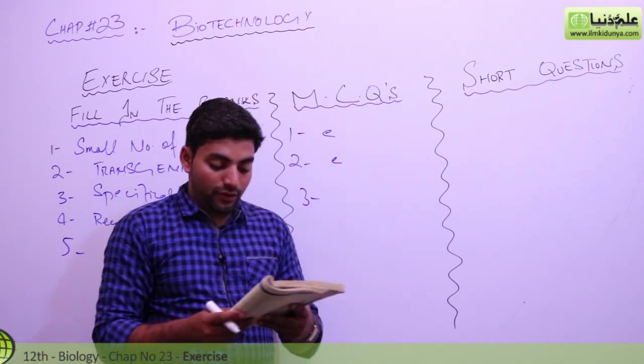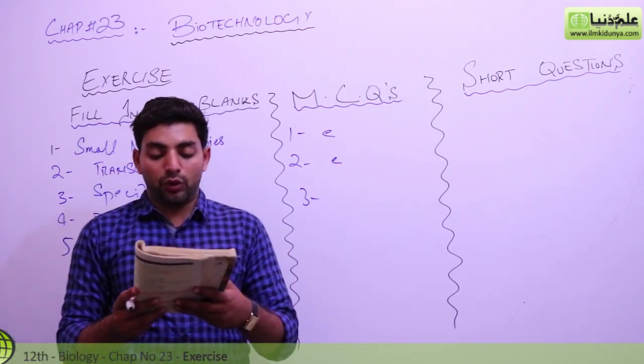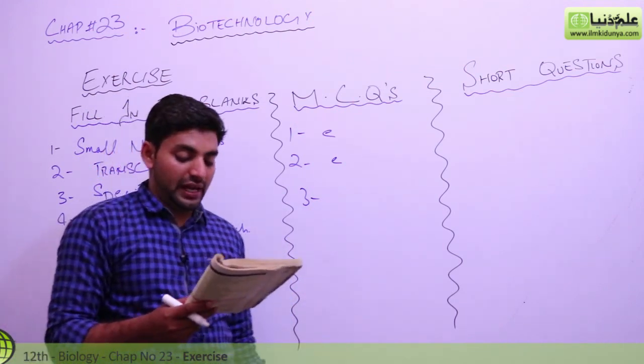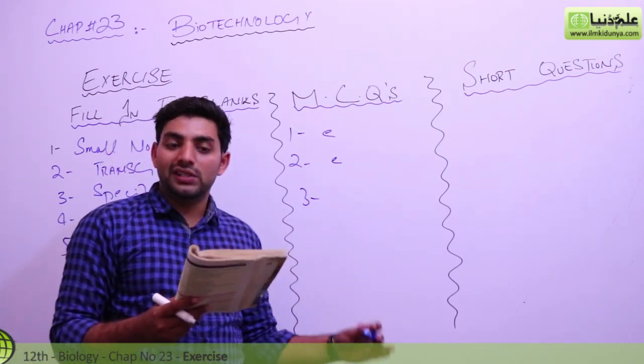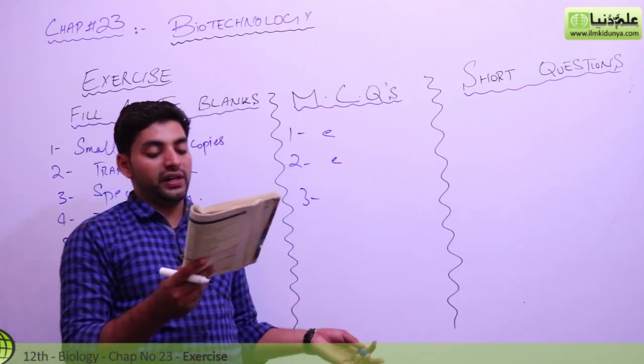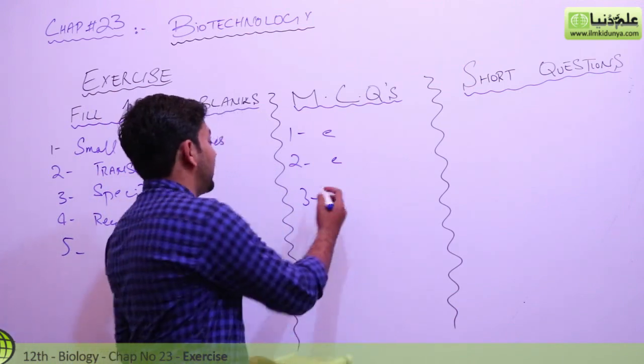Third one: restriction fragment length polymorphism (RFLPs) are achieved by using restriction enzymes, identify individual genes, are the basis of DNA fingerprinting, can be subjected to gel electrophoresis, all of these are correct. So all of these are correct.